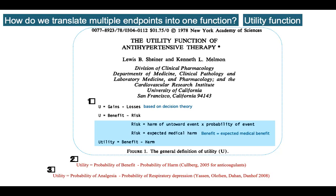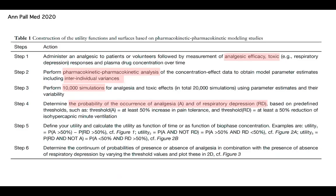For every action we take, there's a benefit and a harm — really, for almost everything that we do, and so also in medicine. If you treat somebody, there's always a benefit and harm. We started looking at this — on one axis you have the probability of analgesia, on the other axis you have the probability of respiratory depression. That's how you calculate the utility function.